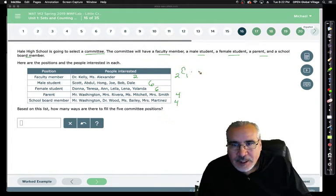For male students, there are six ways. And from six possible choices, we're going to choose one. Same thing for female students, there are six, we're choosing one from there. And then for the parents, there are four. So we're going to take, of those four parents, we will choose one of them. And for the school board member, we will take four of those members. And from that group, we will choose one.